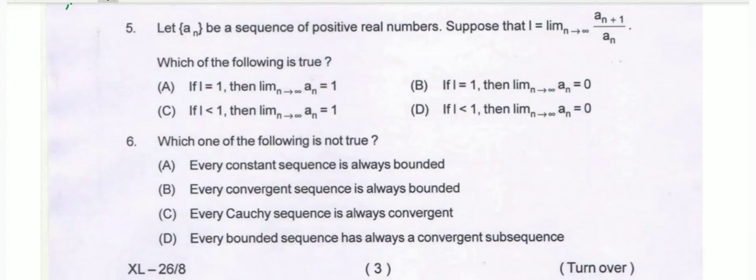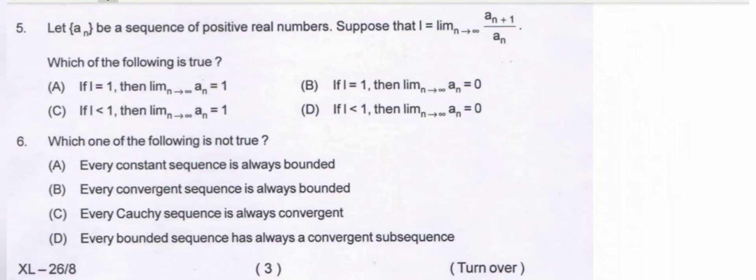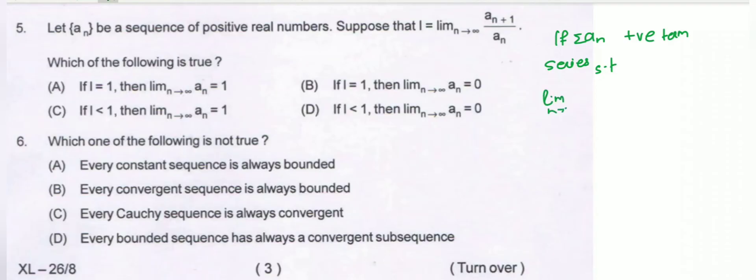Question number 5. Let aₙ be a sequence of positive real numbers. Suppose that l equals the limit as n tends to infinity of a(n+1)/aₙ. Which of the following is true? We use D'Alembert's ratio test. If summation aₙ is a positive term series such that limit n tends to infinity of a(n+1)/aₙ equals l.